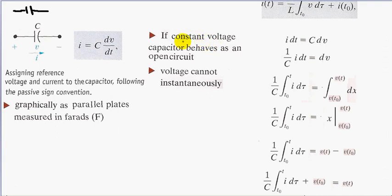Under constant voltage, or steady state, a capacitor behaves as an open circuit — it's an open circuit, so this would pop open. We also find that voltage cannot change instantaneously in a capacitor. If we have a constant voltage for a duration of time, the change in voltage would be zero, your current would be zero, and a current of zero is simulated as an open circuit.